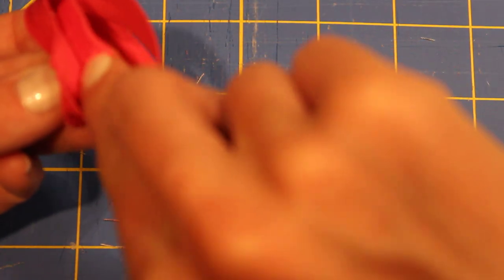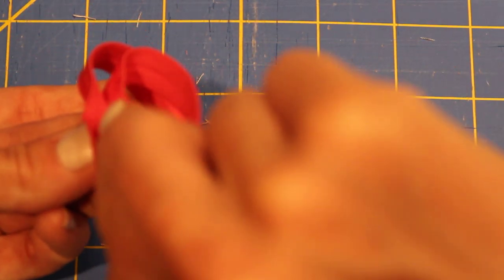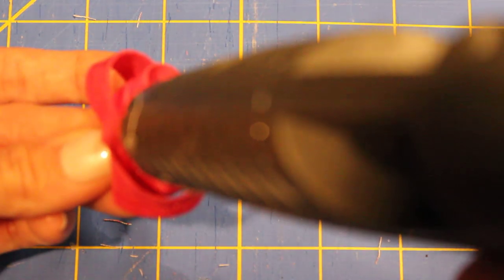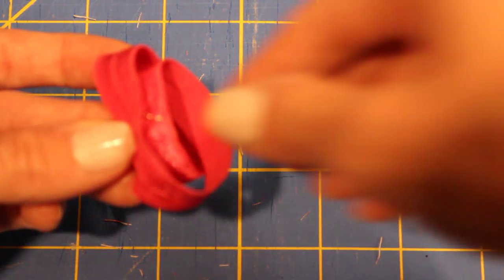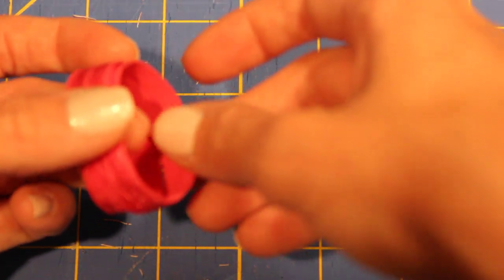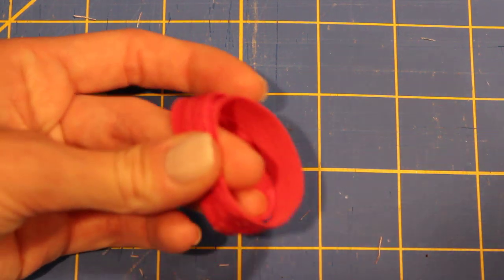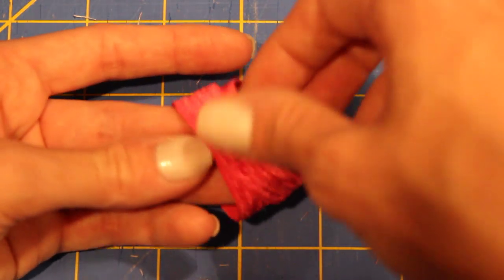And what you're going to do is put a dab of glue behind this seam so that it touches the other seam here. So I'm going to go ahead and do that. Not a lot. Just a little. And I'm going to hold those together so that the glue sets. And we're almost done. One last simple step.